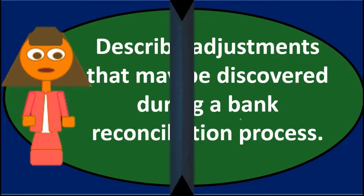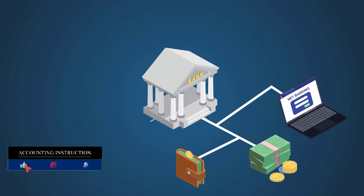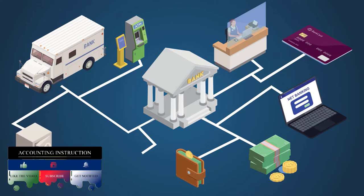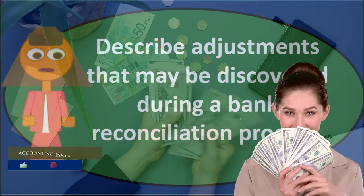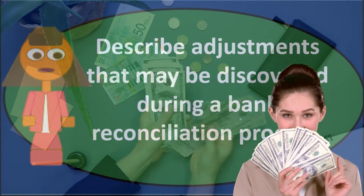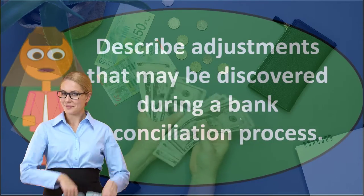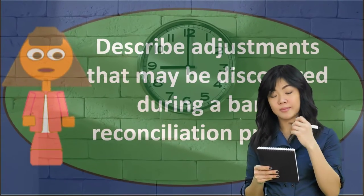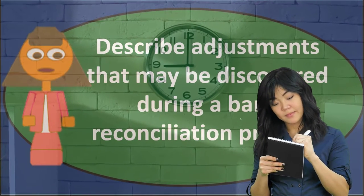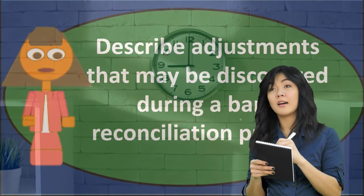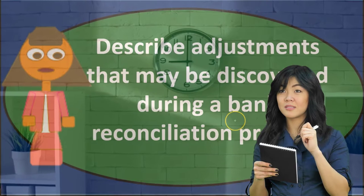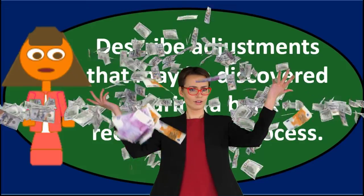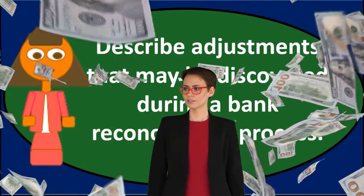The bank reconciliation is one of those internal control processes we have over cash, and it's also useful for any accounting cycle because cash is involved in pretty much all of them — the purchasing cycle, the sales cycle, the employee payment cycle. So double-checking cash helps us verify cash as well as those other processes. We check the bank balance against the book balance as of the end of a time period. Typically we get bank statements monthly, so for March 31st, we compare the bank's ending balance to our books as of that same date and see if they match.